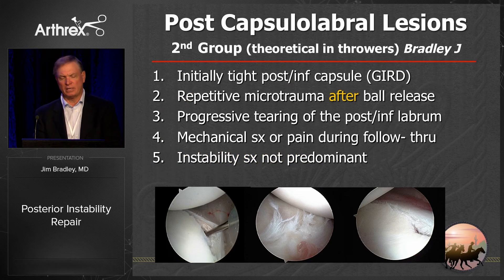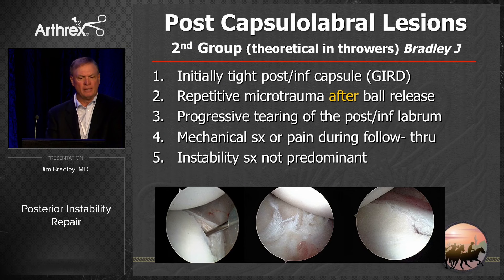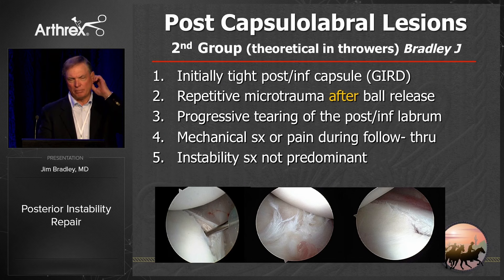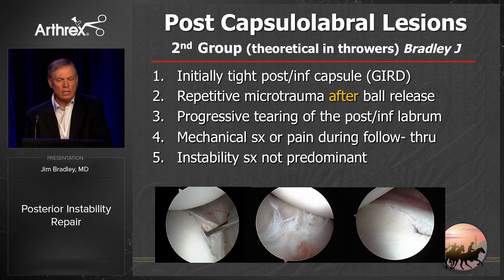There's a second group — throwers — and they are completely different. They initially get a tight posterior inferior capsule, then repetitive microtrauma after ball release, followed by progressive tearing of the posterior inferior labrum, and then mechanical symptoms or pain during follow-through — but instability is not one of the symptoms. A third group involves muscular imbalances with tight pecs and overactive lats.